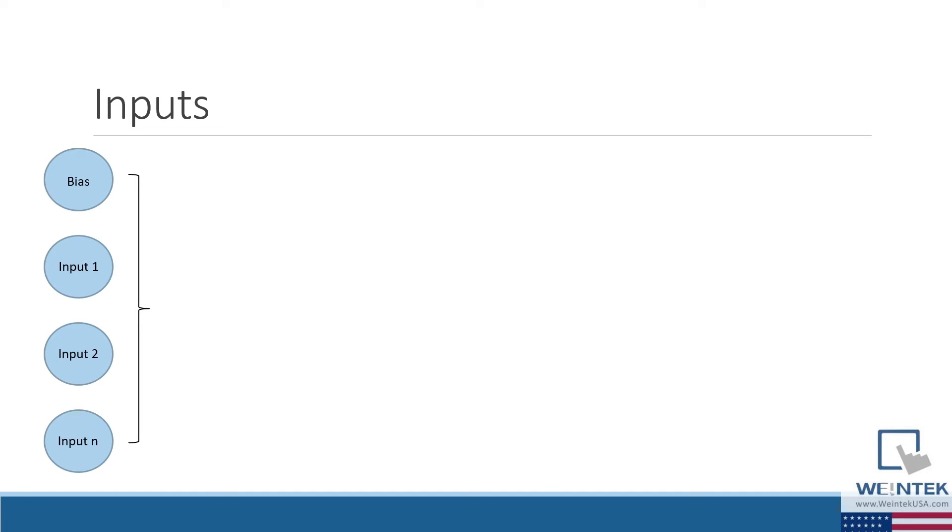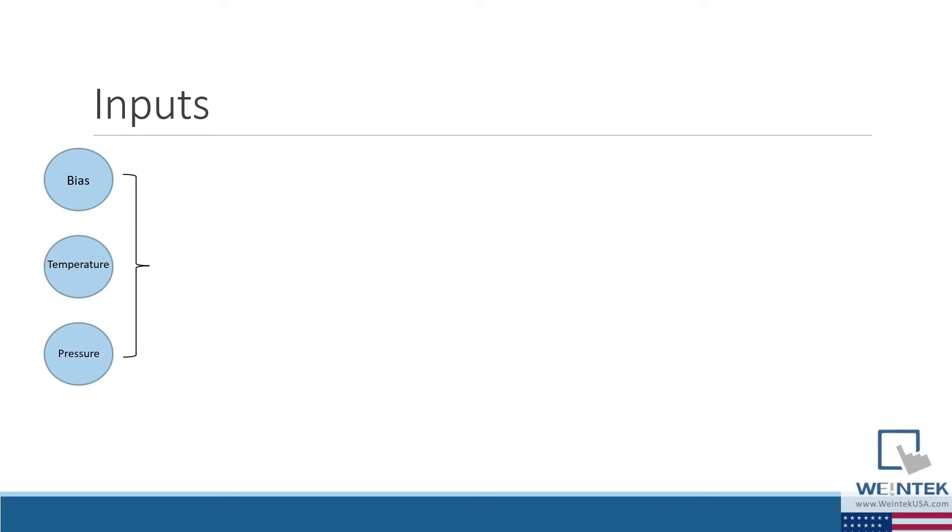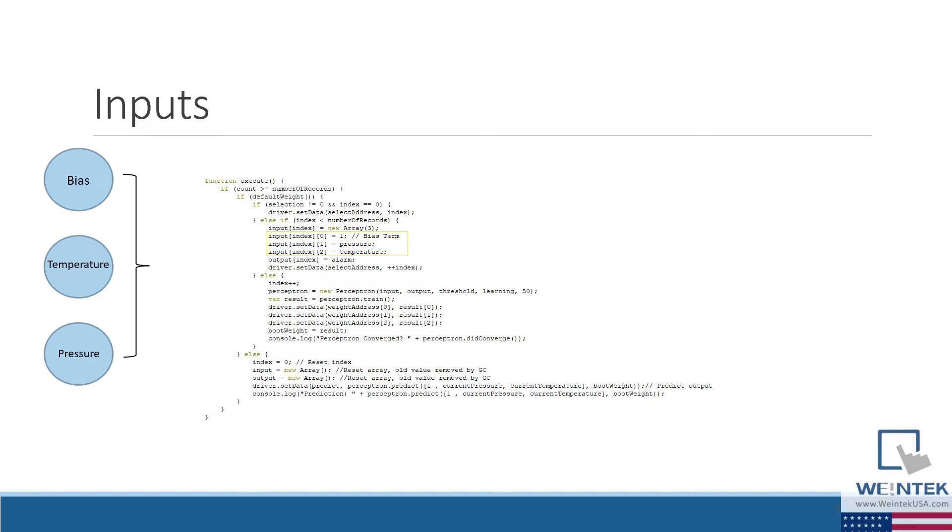To begin, let's examine the input data. The algorithm processes a two-dimensional array of elements, where each element in the first dimension corresponds to a feature that correlates with the output. Within our application, we were trying to determine if a machine fault would occur based on a set temperature and pressure. Those were our inputs.